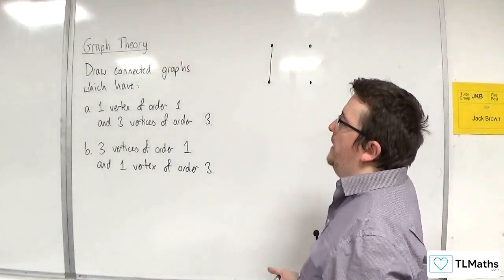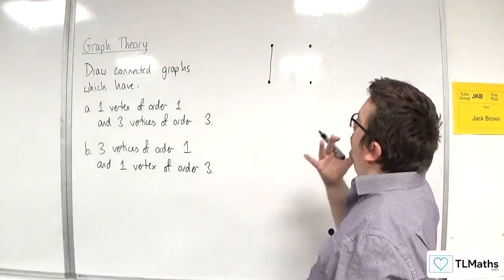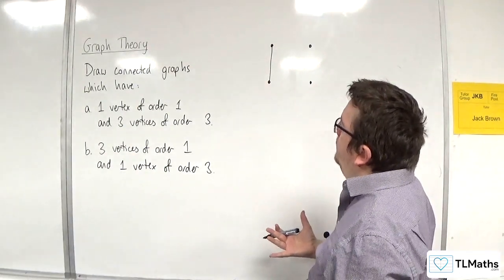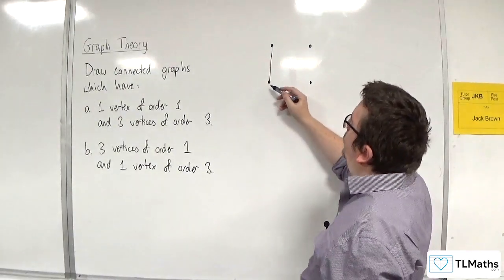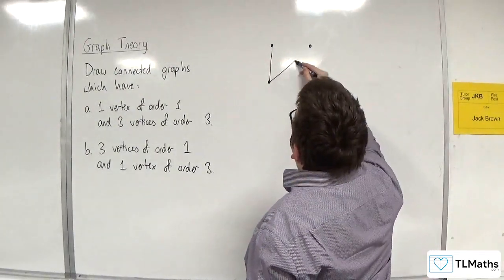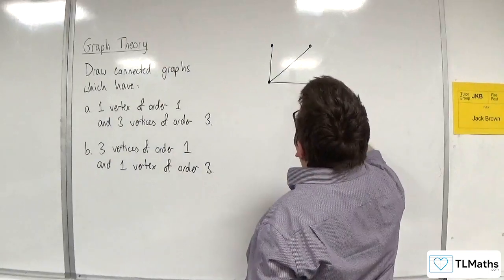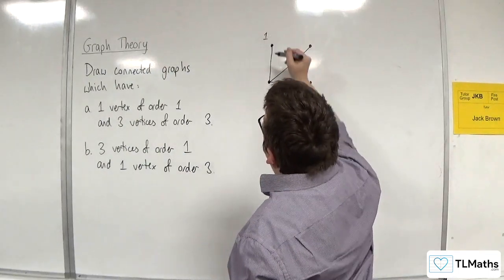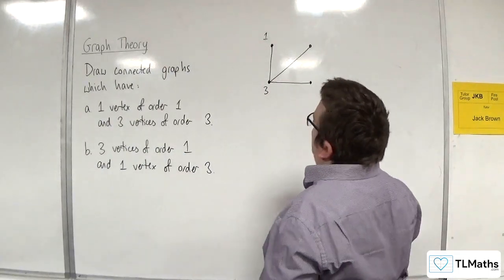Then we want the other three to have vertices of order 3. Okay, so for this one to have order 3, then I can join it to the other two. So this one has 1. This one has 3. So that's all good.